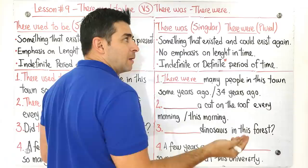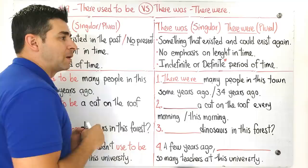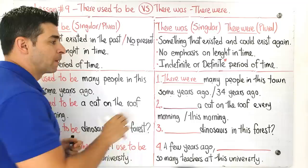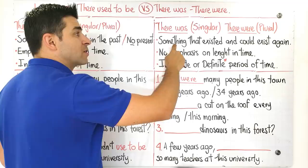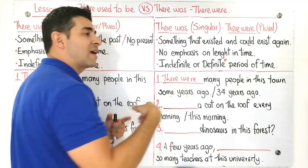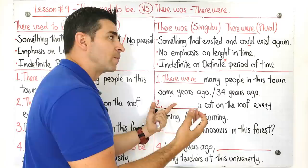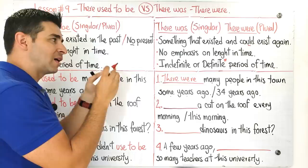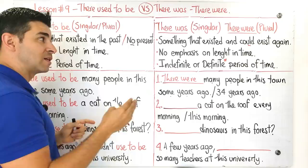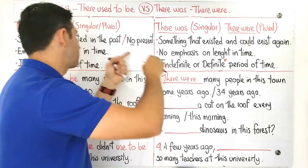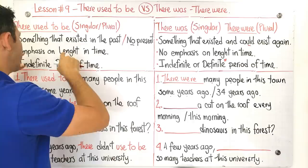Pacho, why? Because we're talking about many people. Many people is plural and if it's plural, so I have to use there were. There weren't many people in this town some years ago. Guys, pay attention to this please. When we use there was or there were, for example in this case, we're talking about something that existed in the past and could exist again. There's an open possibility for something to exist in the future. But in here it's totally different. Something that existed in the past and it's still in the past, not in the present or wouldn't be in the future. That's a big difference.